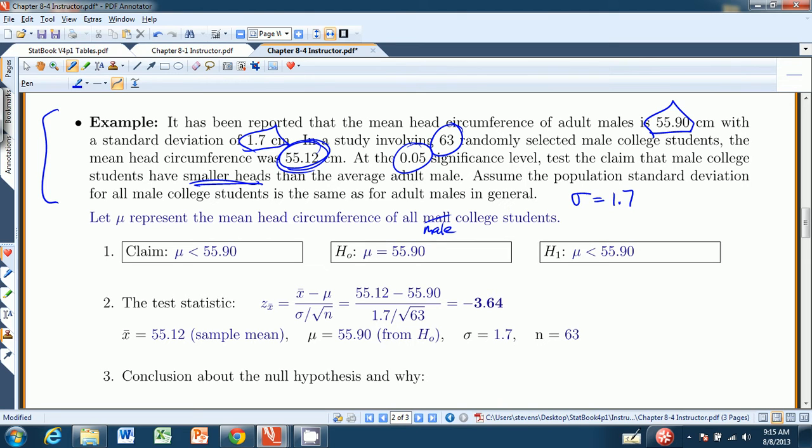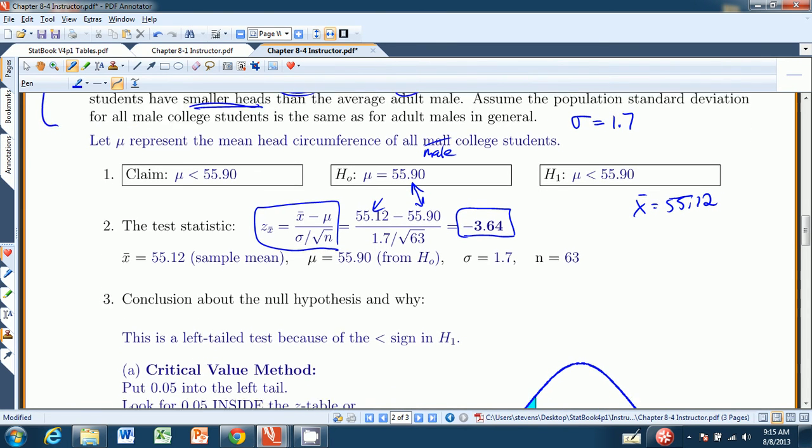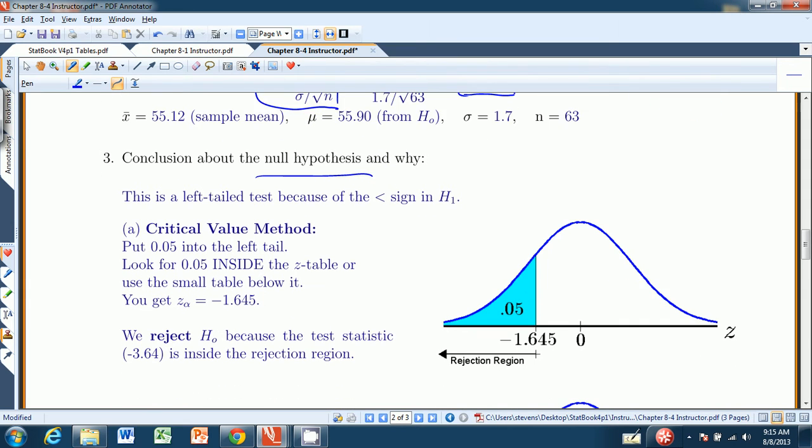So we have our claim, null, alternate, and the test statistic. It comes from this formula. The sample mean is 55.12. That's from our sample mean for randomly selected male college students. The mean from the null hypothesis comes from right there. The population standard deviation, which is assumed to be 1.7, divided by the square root of n. When you do that, you get a test statistic z sub x̄ equal to negative 3.64. That's pretty extreme, so we're looking pretty good for our claim. So what do we do about the null hypothesis? Do we reject or fail to reject?